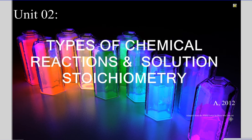Congratulations on surviving your first unit of AP Chemistry. There were tears, there was blood. But it will be okay because we're moving on now — this is a new unit. This should go much better because it will go much slower. Unit 2: Types of Chemical Reactions is what we'll focus on in our second half of the unit, and Solutions and Stoichiometry is what we'll focus on now. It should be mostly review for most of you.